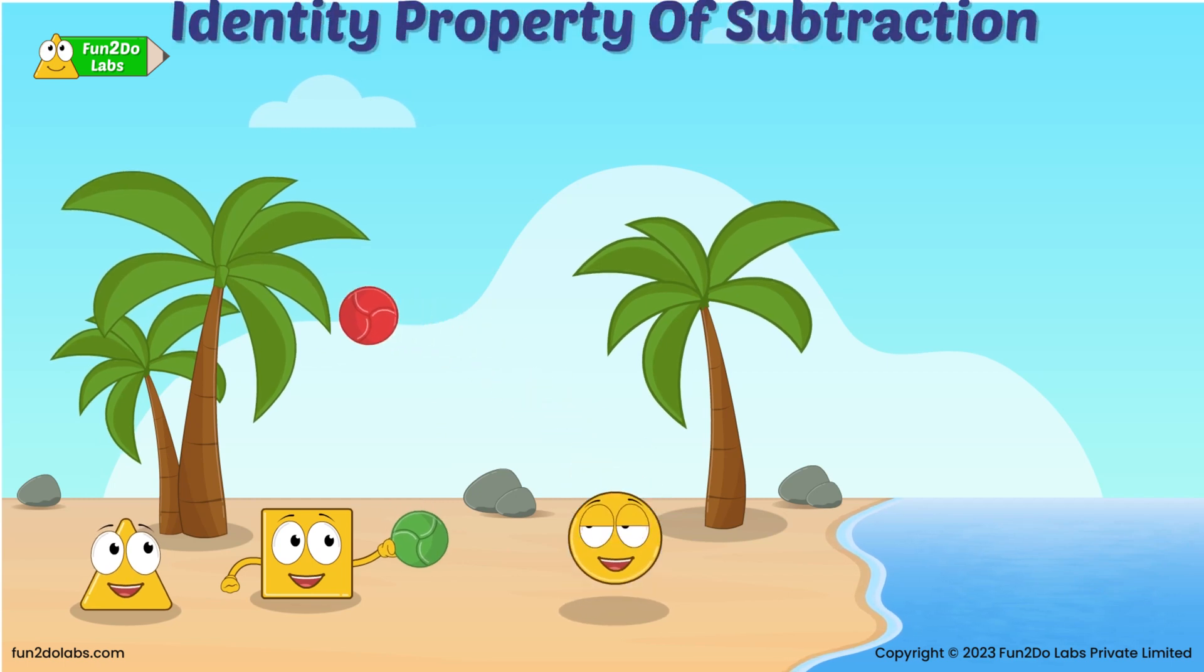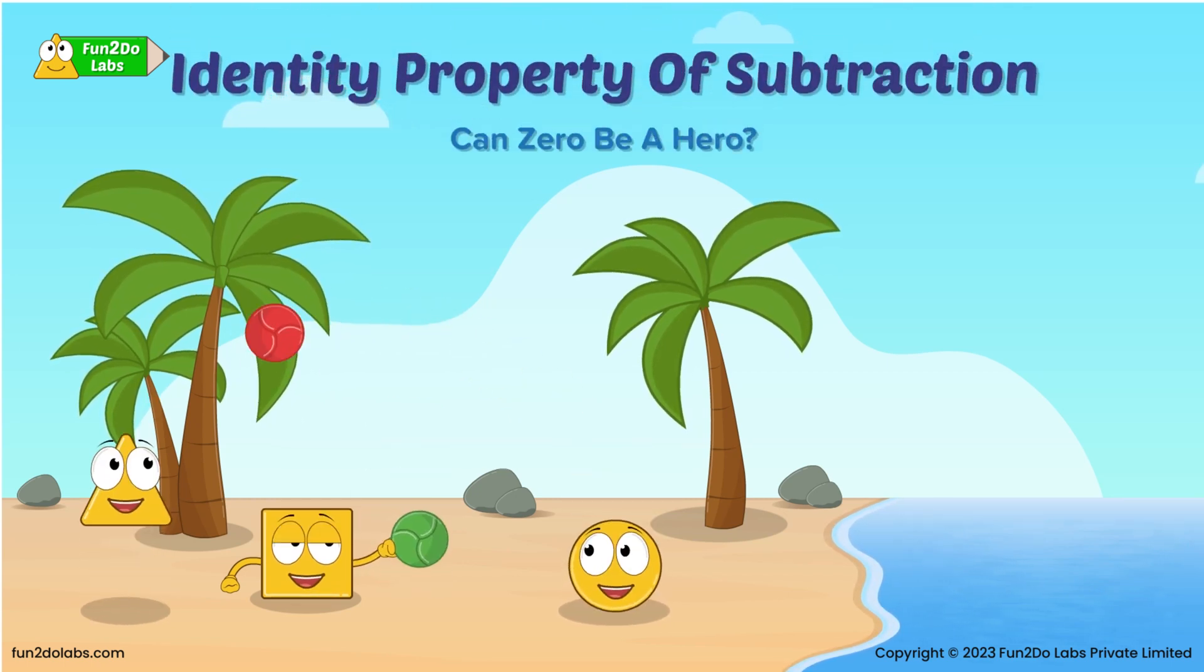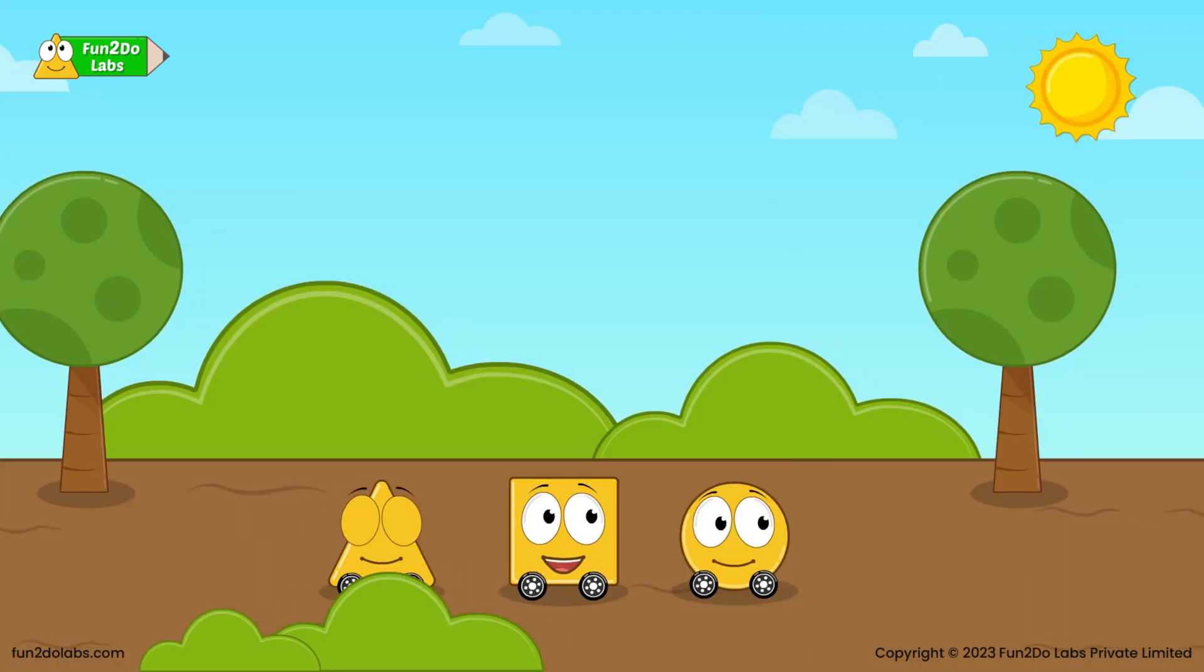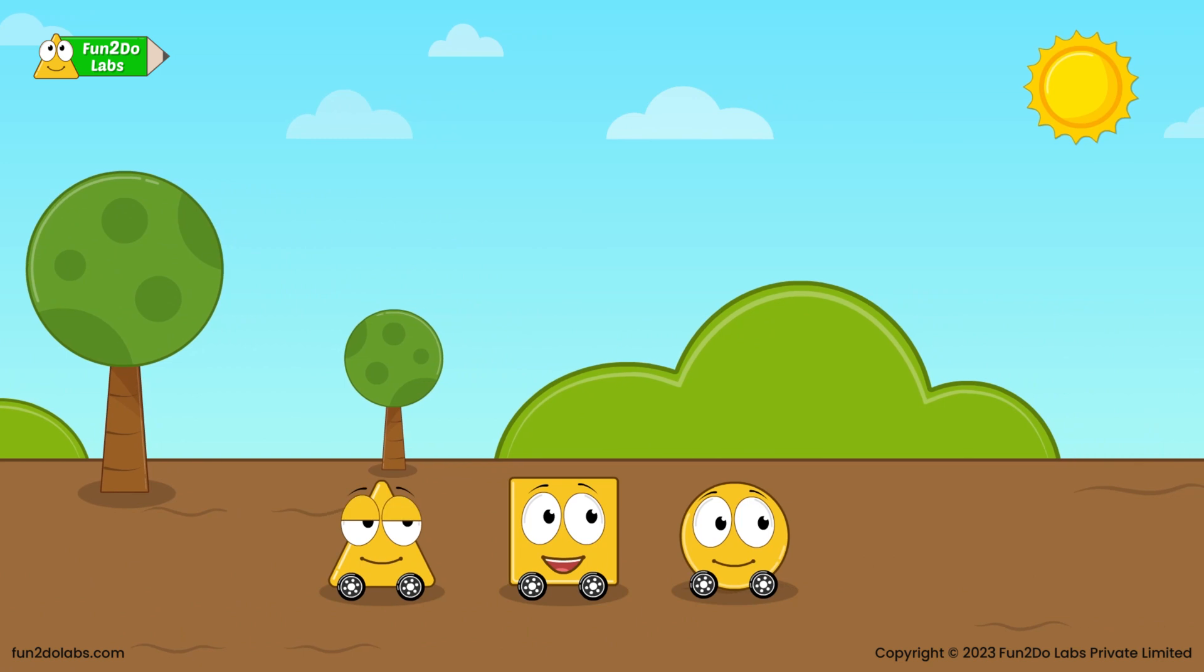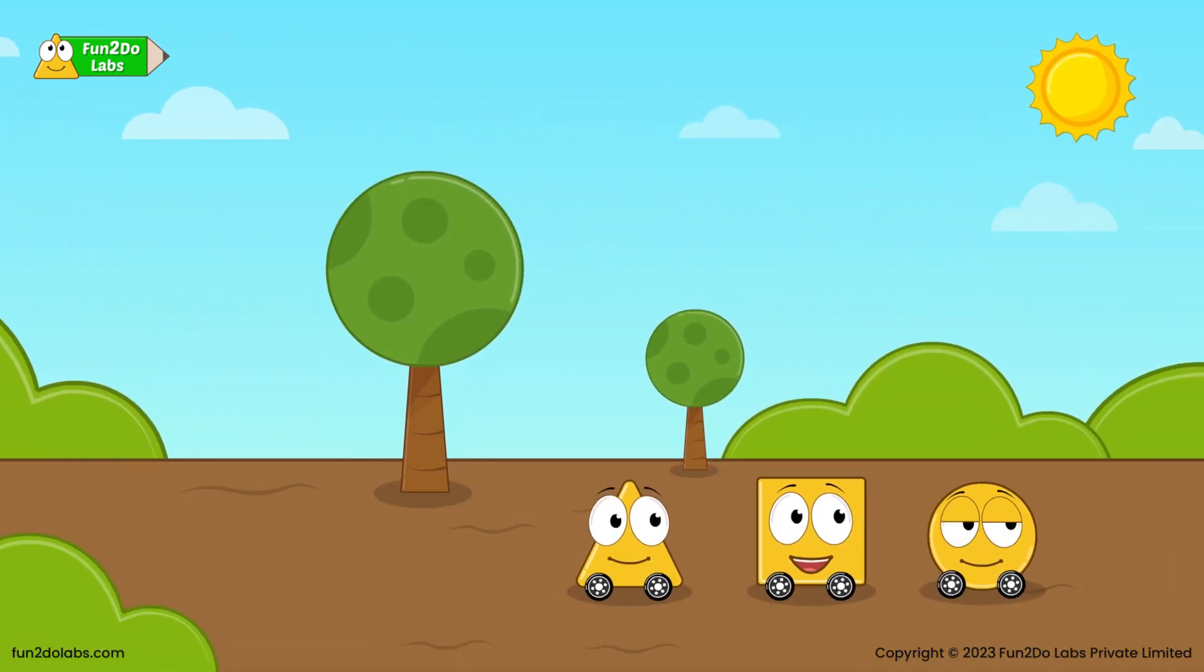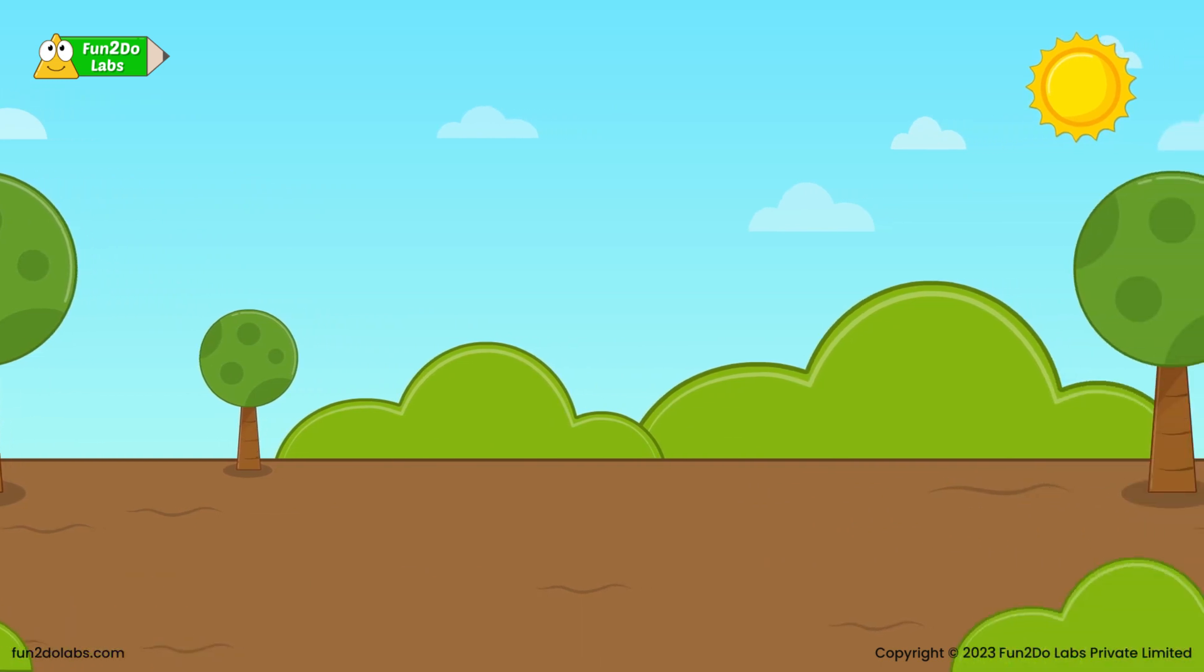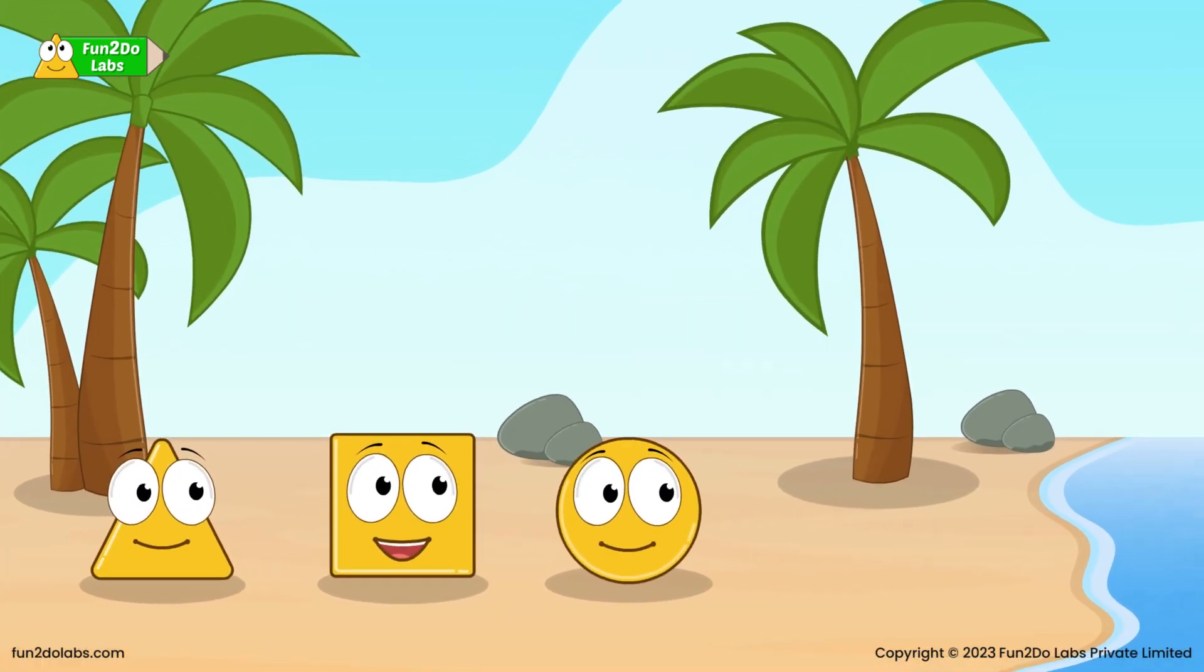Math Story: Identity Property of Subtraction. Can Zero be a hero? Treeho, Squaro, and Sirho are going to a nearby beach. It's a boys day out today. They are really excited. Soon they reach the beach and decide to chill for some time.